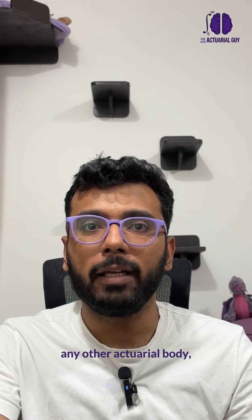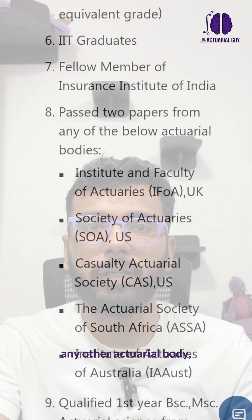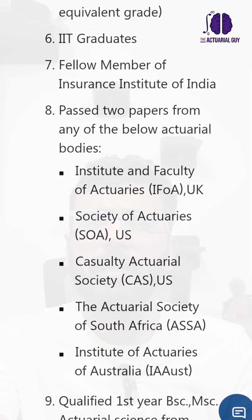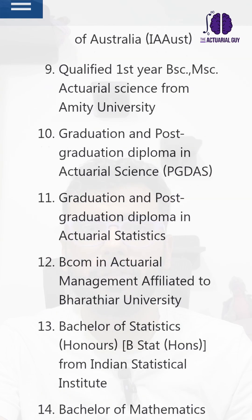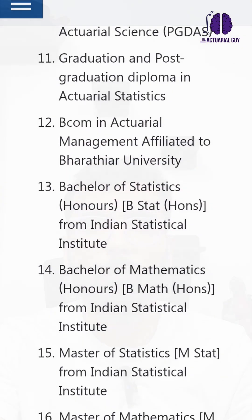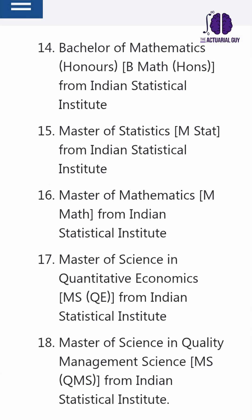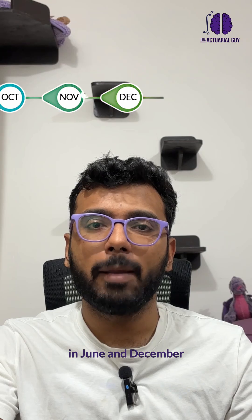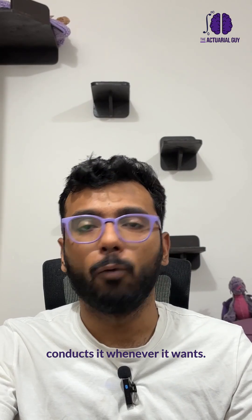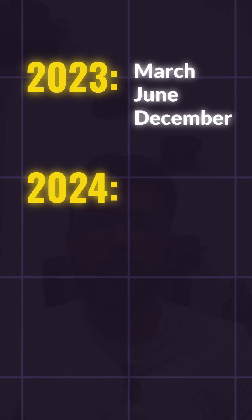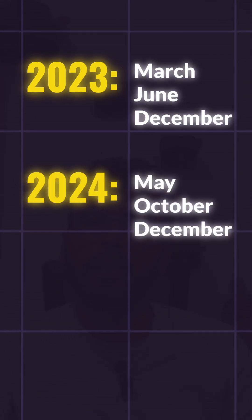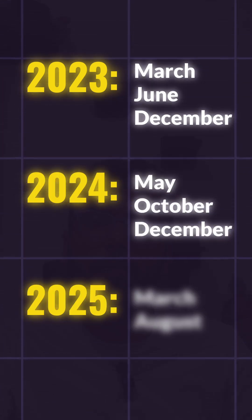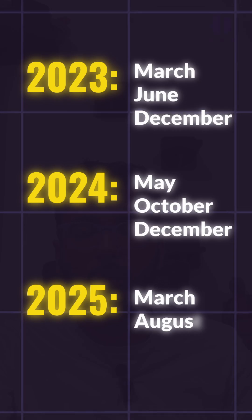ASET is also exempted for Fellows of Insurance Institute of India, people who have passed at least two exams from any other actuarial body such as IFoA and SOA, and graduates of some particular colleges whose information is mentioned on the screen. ASET is supposed to be conducted twice a year in June and December, but IAI conducts it whenever it wants — for example, in 2023 it was conducted in March, June, and December; in 2024 in May, October, and December; and in 2025 so far it has been conducted in March and August.